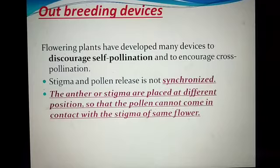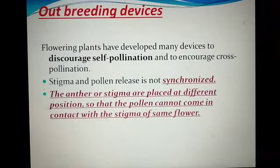The second device is that the anther and stigma are placed at different positions. The anther and stigma are at different positions in such a way that they avoid self-pollination. In a bisexual flower, the stigma and pollen are positioned so that the pollen cannot come in contact with the stigma of the same flower.